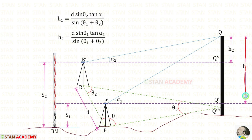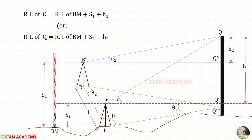We have now derived expressions for H1 and H2. To find the reduced level of the top of the tower, there are two methods. In the first method, add the reduced level of the benchmark with S1 and H1. In the second method, add the reduced level of the benchmark with S2 and H2.